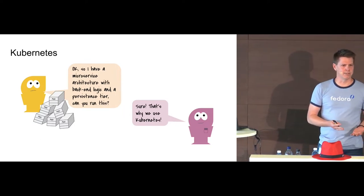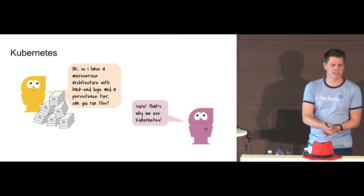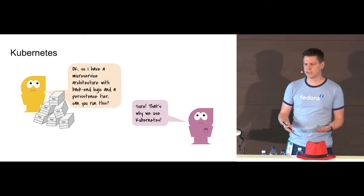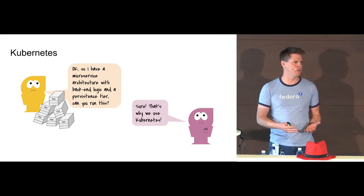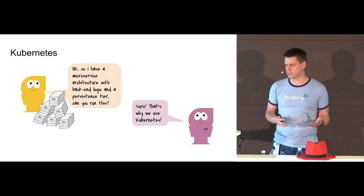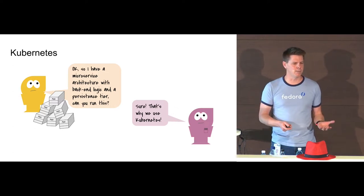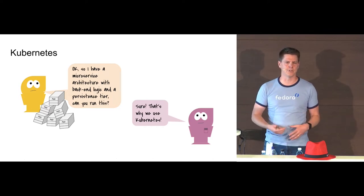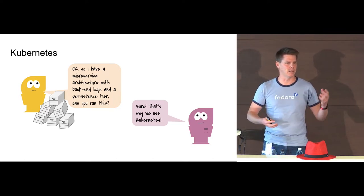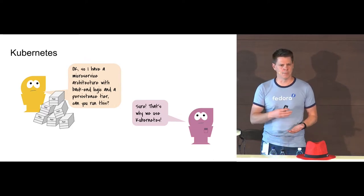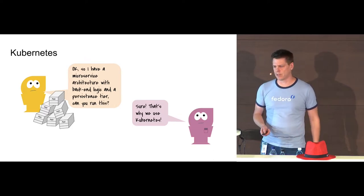If you're just running a single container, that's a trivial example. In real-world scenarios you're running a collection of applications that talk to each other. That's what Kubernetes is for — it takes your applications, orchestrates them, and enables them to talk to each other in a non-trivial architecture.